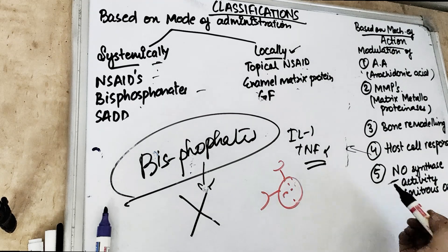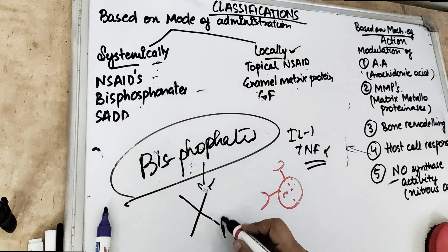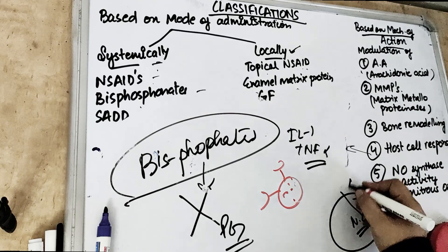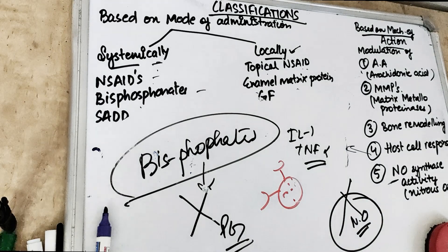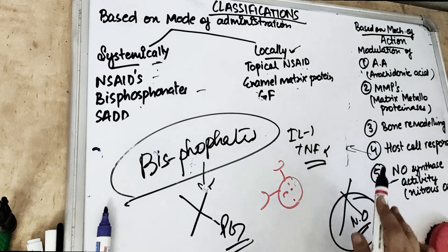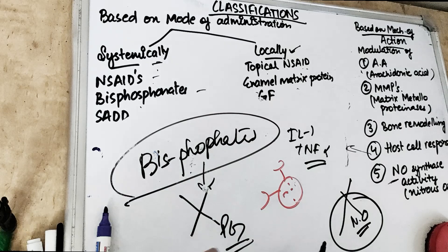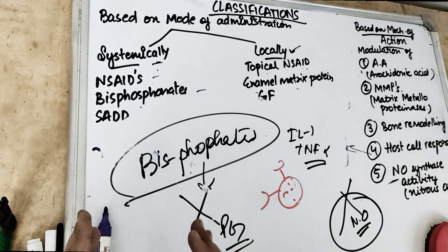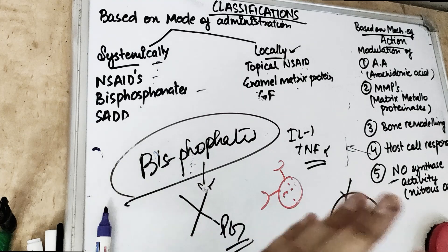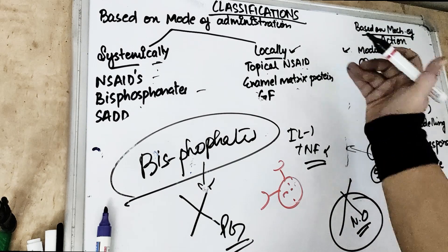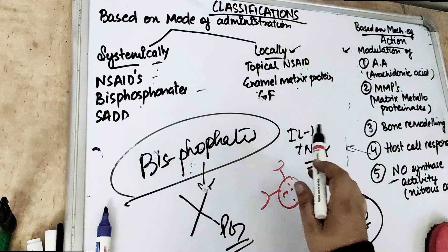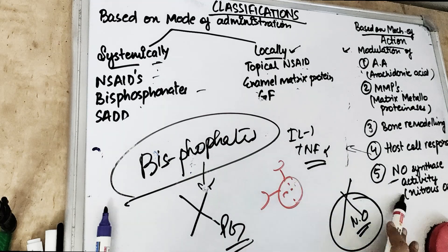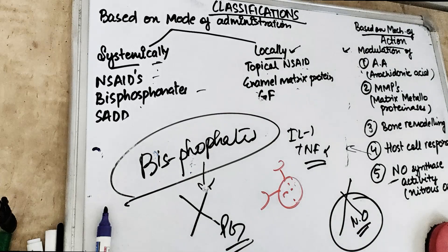Let's discuss one by one how modulating these things can modulate the host response: by modulating arachidonic acid, by modulating MMPs, by modulating bone remodeling, by modulating the host cell response, and by modulating nitric oxide synthesis activity — and how this can manage and prevent periodontal disease.